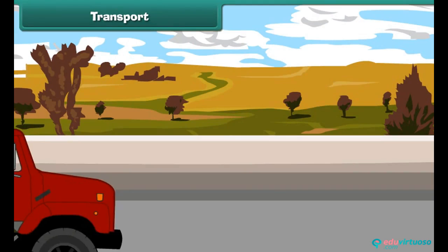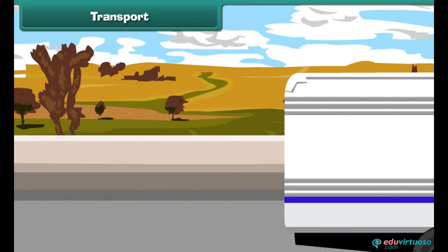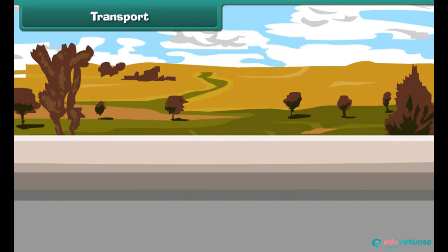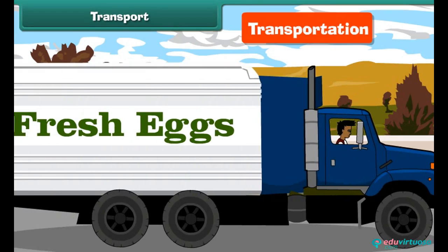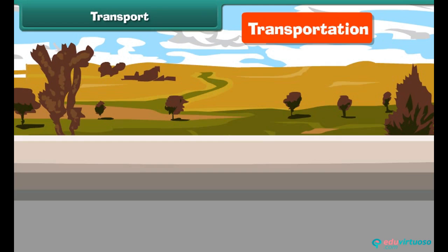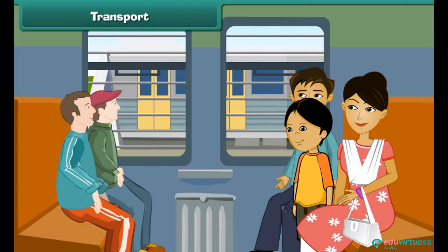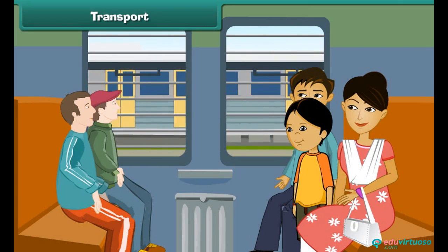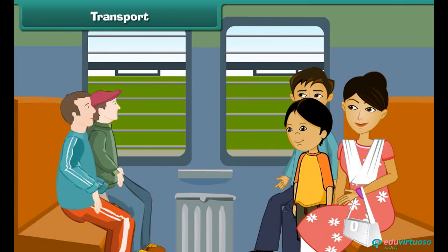The movement of goods, animals, and people from one place to another is known as transportation, or simply transport. Transport removes the barrier of distance and promotes trade between places.